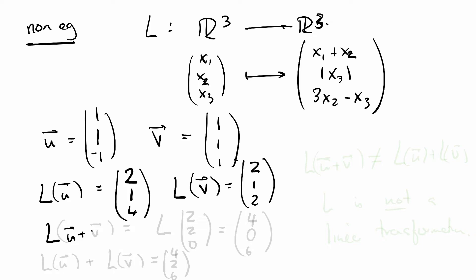L of u plus v is equal to L of 2, 2, 0, which is 4, 0, 6. But L of u plus L of v is equal to 4, 2, 6. This means that L of u plus v is not equal to L of u plus L of v. So L is not a linear transformation.